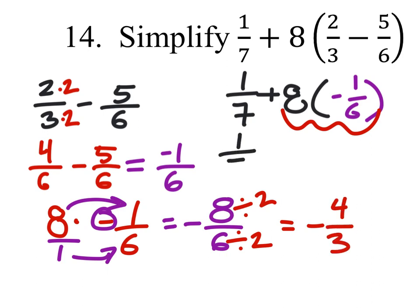So the expression now is 1/7 plus a negative 4/3, which we can just look at as minus 4/3.